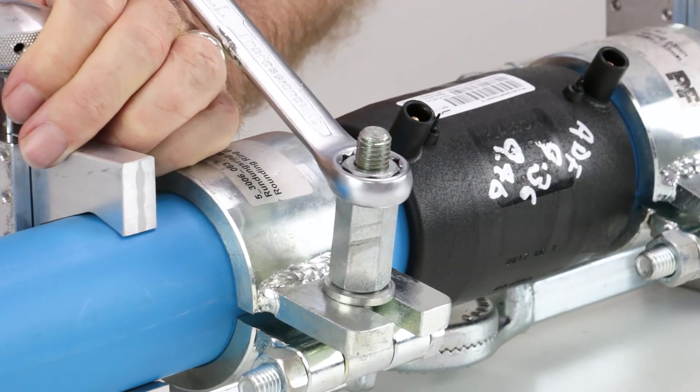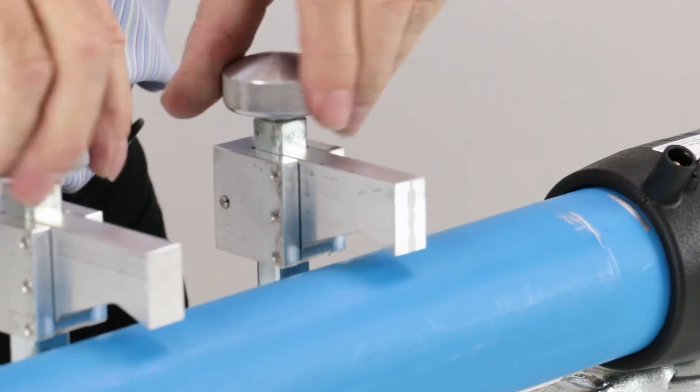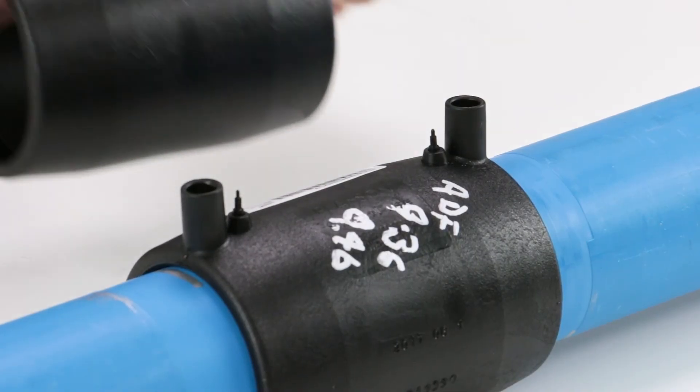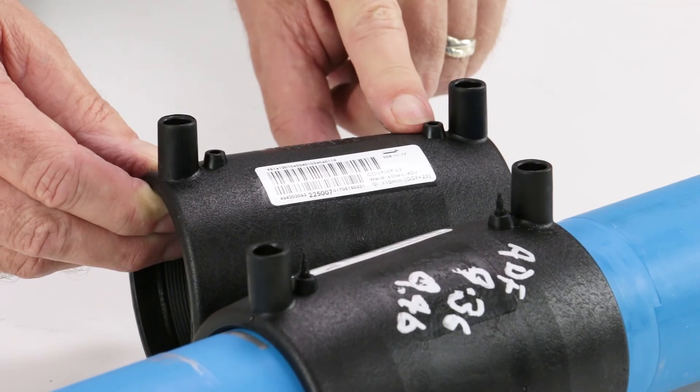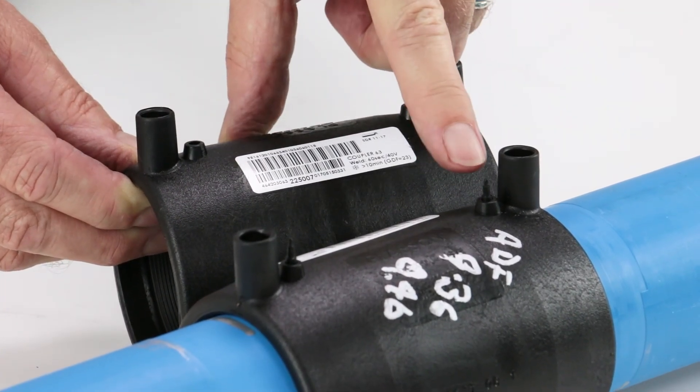Now that the joint is fully cooled, it's fine to remove the re-rounding tools as well as the clamps. Further evidence of a weld having been done can be seen in the weld indicators shown here that have now risen, in comparison to a fitting that hasn't been welded where they're still retracted.